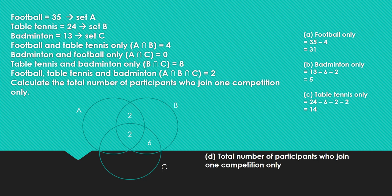Therefore, the total number of participants who joined one competition only is the sum of these three areas: 31 plus 5 plus 14. The answer is 50.